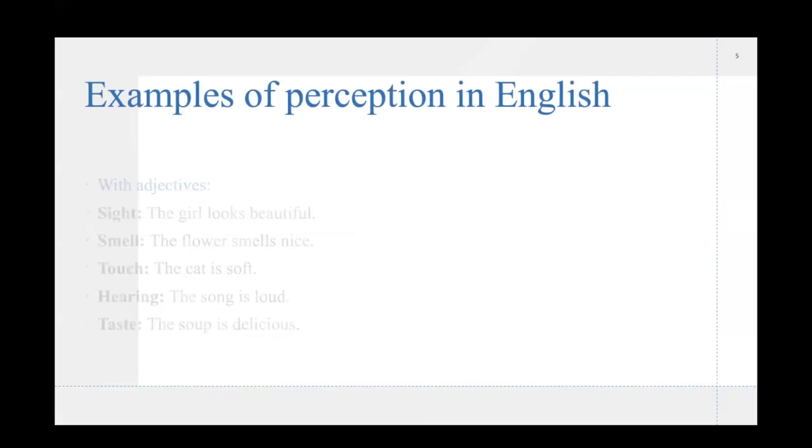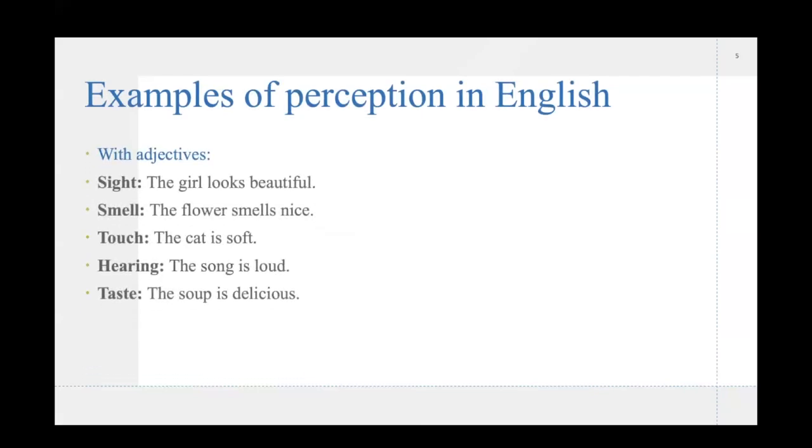As for with adjectives, we have for sight, the girl looks beautiful. In this case, it's really not about her seeing, but it's more about the state of her existence and the manner in which she exists. So, she looks beautiful. For smell, the flower smells beautiful. So, it's also about the quality of the smell or the scent. The cat is soft for touch. So, once again, it's more about quality. Hearing, the song is loud. And for taste, the soup is delicious.